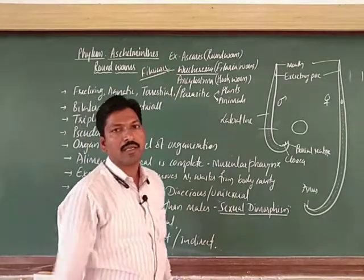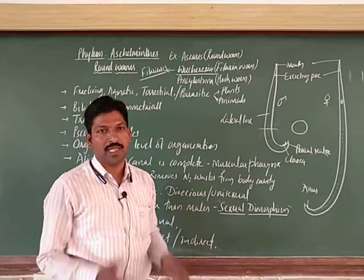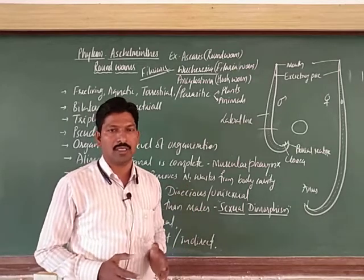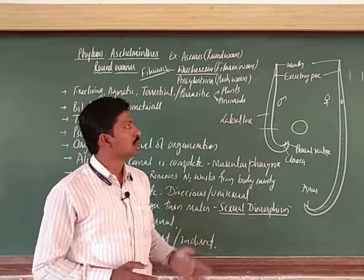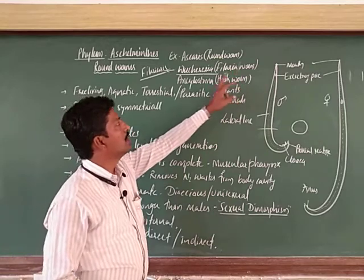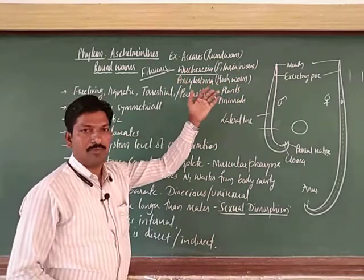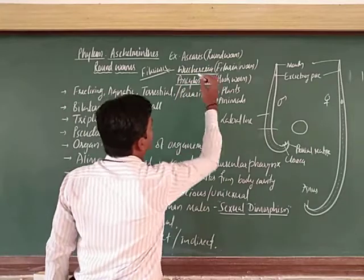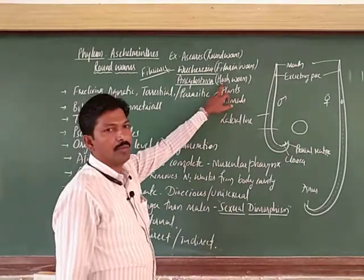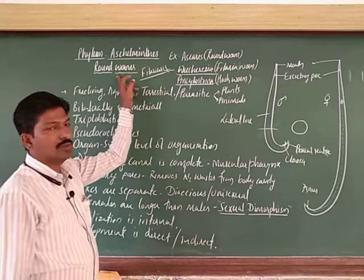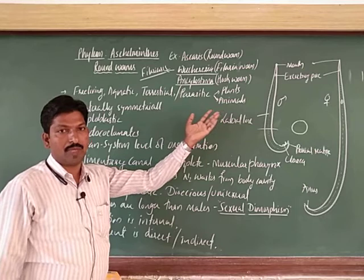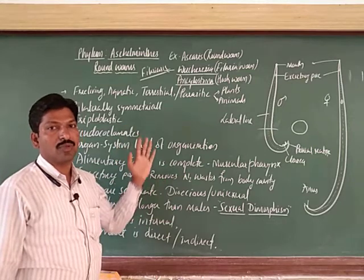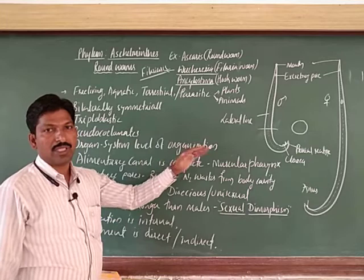Filariasis causes elephant-like swelling of legs. The legs become so swelled, like a filler — elephant-like. In Kannada, we call it 'anekalu roga.' That is caused by the filarial worm, which is a parasitic form. One more example is Ancylostoma — that is the hookworm. Hooks may also be present in tapeworms, but we call those flatworms. Here the body is cylindrical or circular in cross section.